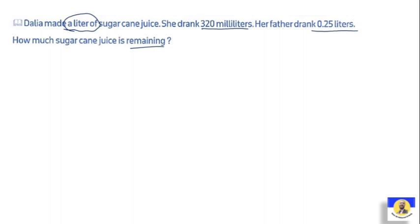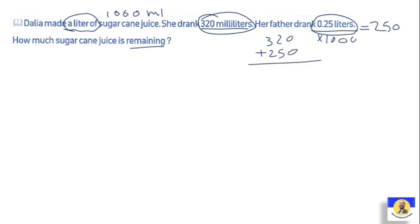We can make them all milliliters. The liter will be 1000 milliliters. 320 milliliters stays. Her father drank 0.25 liter which is 250 milliliters, because we multiply by 1000. First, I'll do 320 plus 250 to find what she and her father drank together. 0 plus 0 is 0, 2 plus 5 is 7, and 3 plus 2 is 5. That's 570.